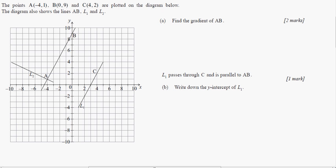Points A(-4,1), B(0,9), C(4,2) are plotted on the diagram below. The diagram shows lines AB, L1, and L2. Okay, find the gradient of AB. That's not a problem, we can do that.